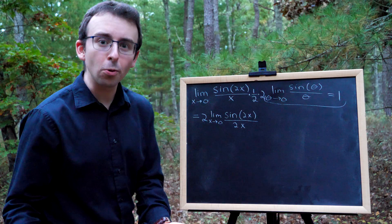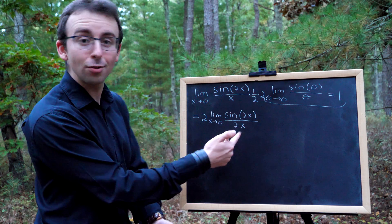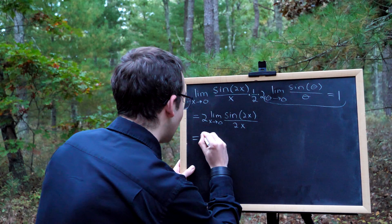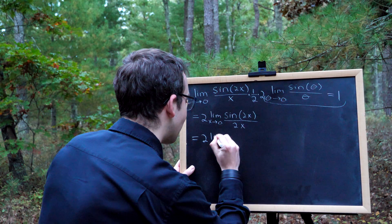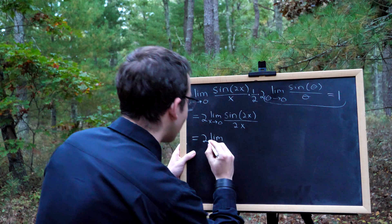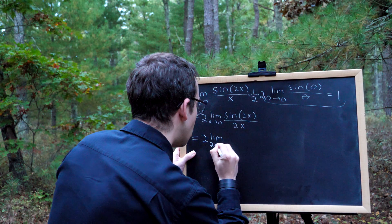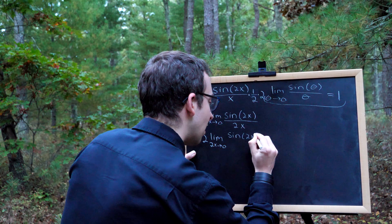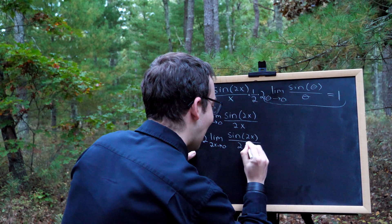Because what's happening to 2x as x approaches 0? Well, 2x is approaching 0 too, right? If x is super small, 2x is super small. And so conveniently enough, this is equal to 2 times the limit. If x is approaching 0, then so is 2x. So the limit as 2x approaches 0 of sine of 2x over 2x.